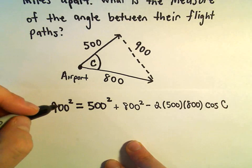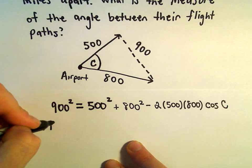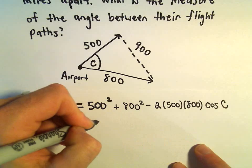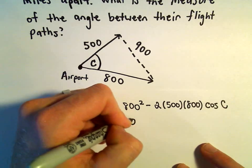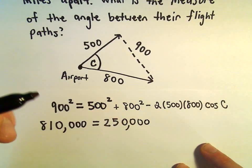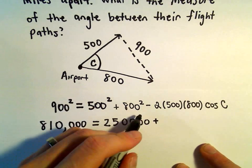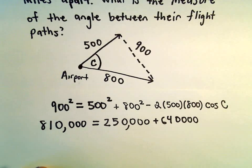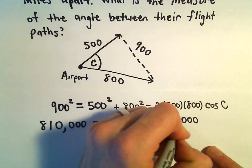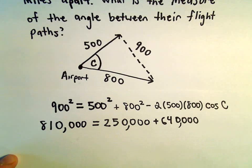So let's see, 900 squared, that's going to be 81 and four zeros. 500 squared, that's going to give us 25 and four zeros. Let's see, 800 squared, that would be 64 with four zeros, so 810,000, 250,000, 640,000.